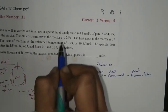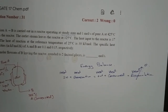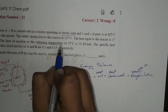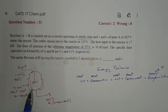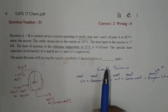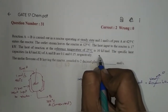At steady state, the accumulation term is zero. The reference temperature is 25 degrees Celsius. The heat of reaction at 25 degrees Celsius is 30 kilojoules per mole, and it is positive, so this is an endothermic reaction. If the value were negative, it would be an exothermic reaction.